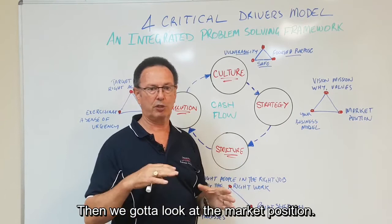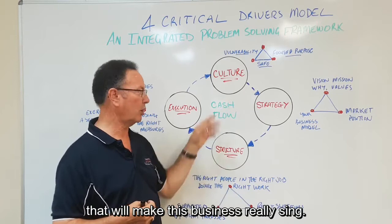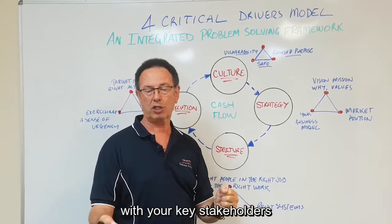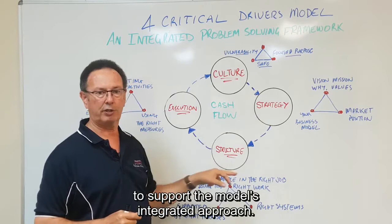Then we've got to look at the market position. What are we trying to achieve in this business? Where are we positioning that with our customer base to get the results that we want and ultimately achieve the cash flow that will make this business really sing? The other part is your own business model. How are you structuring that model to allow you to communicate what your business is about with your key stakeholders and with your customers and other critical players? So you've got to have those components in place to support the model's integrated approach.